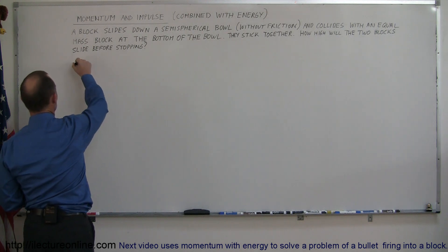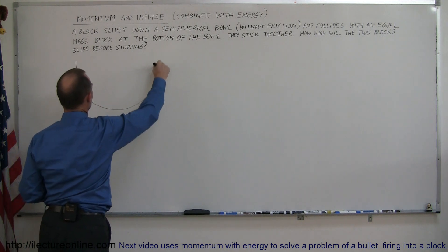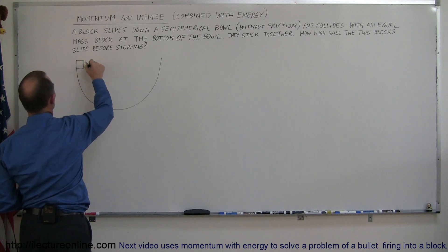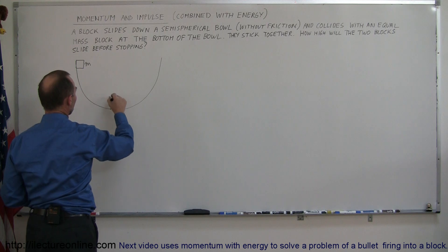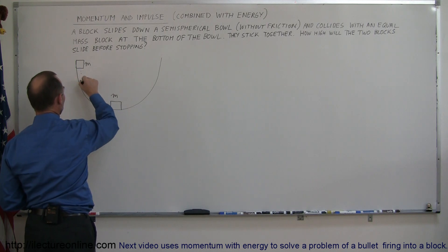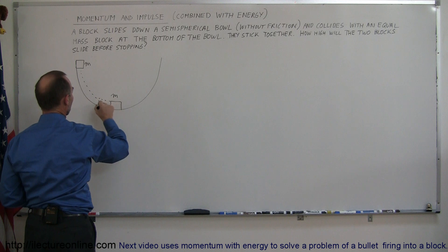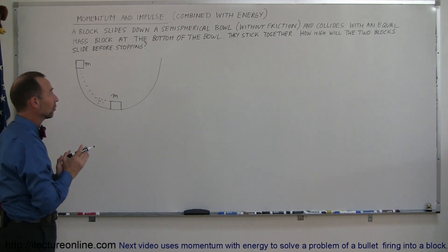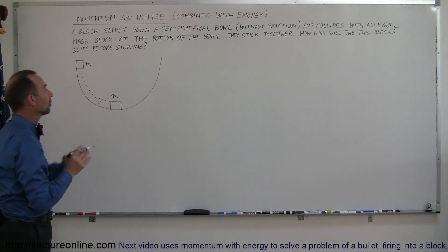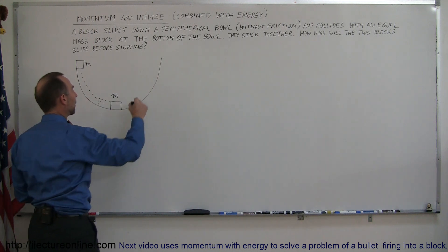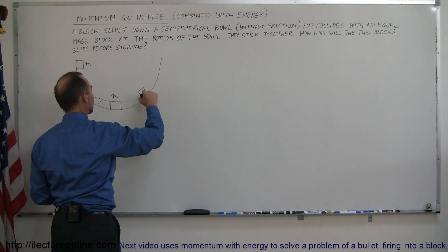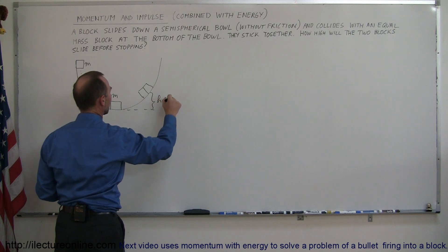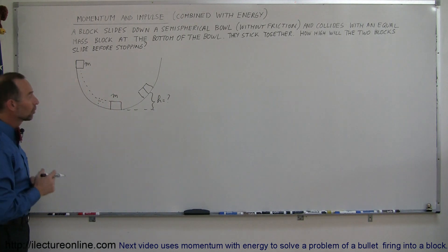So let's make a picture. Here's a semi-spherical bowl. We have a block with mass m that starts sliding from the top. There's a second block at the bottom, also mass m. When this block collides with this block, they will both continue to move forward because they stick together, so there's energy loss in the collision, and then they'll slide up and stop at some point. The question is: how high above the ground will they be when the two blocks come to a stop?